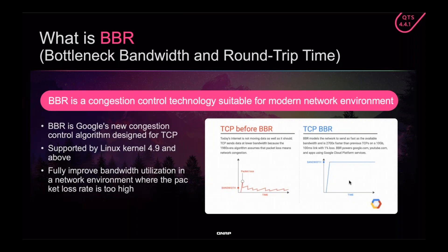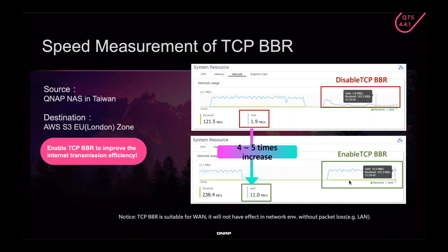For example, if you want to send data a very long distance through the internet, your packets have to be forwarded from router to router — and every time they're forwarded, it's called a hop, and at every hop there's opportunity for packet loss. In this example, we sent data from Taiwan to London — a long distance with a lot of opportunity for packet loss — and in that situation we saw a four to five times increase when using TCP BBR. If you're sending data a much smaller distance, you may not see the full four to five times increase, but it's still a very helpful feature.